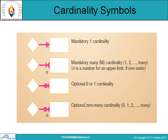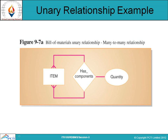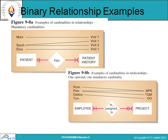A unary relationship example is the material unary relationship with a many-to-one relationship, where an item 'has component' with a quantity attribute. A binary relationship example shows two entities — doctor and patient — with a 'visits' relationship according to patient history, showing how many patients and visits are represented.